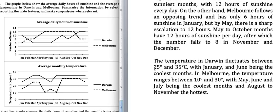Moving to the temperature graph: the temperature in Darwin fluctuates between approximately 25 and 35 degrees C, with January and June being the coolest months at around 25 degrees. So the temperature fluctuates within a 10-degree range — between 25 and 35.